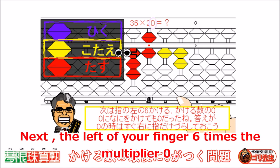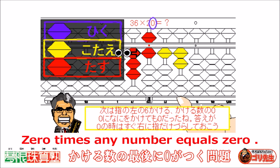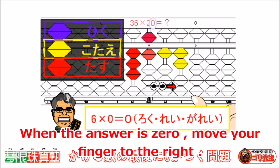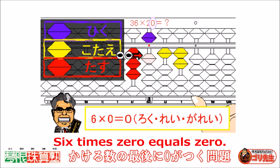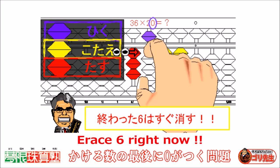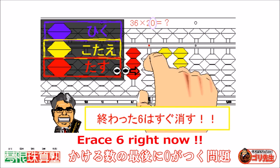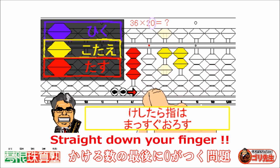Next, the left of your finger — six times the multiplier, zero. Zero times any number equals zero. When the answer is zero, move your finger to the right. Six times zero equals zero. Erase six right now. Straight down your finger.